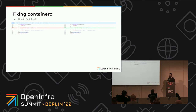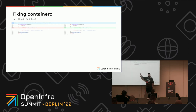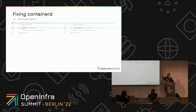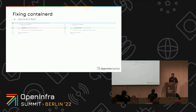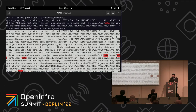Instead of doing the whole dance to get the label or not, I just rely on the SELinux library for Go, because that library actually knows where to check. If the label is present it returns the right label; if not, it returns an error. So we just do that and rely on the library.